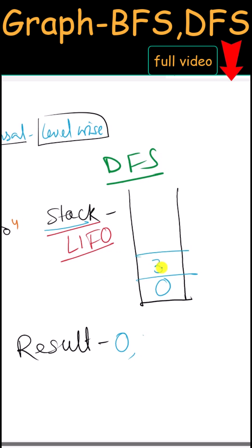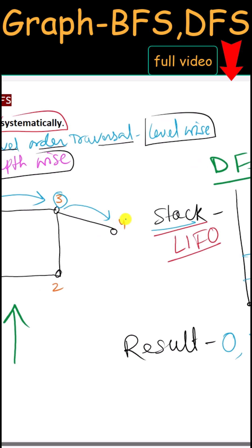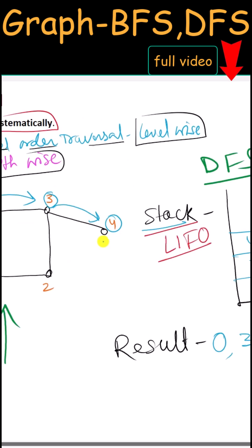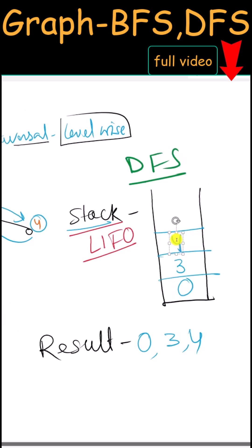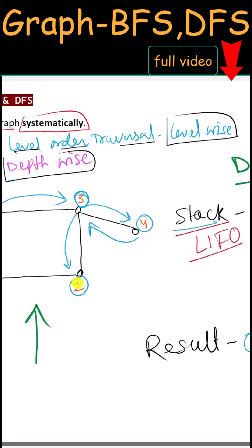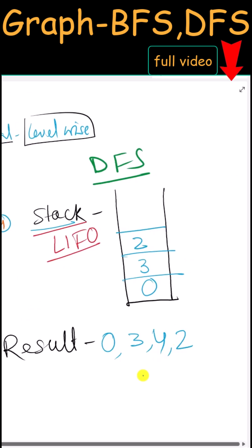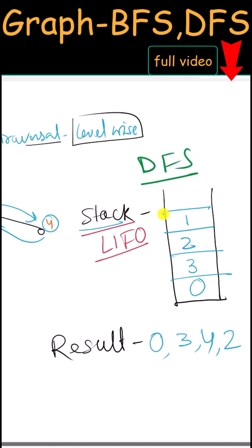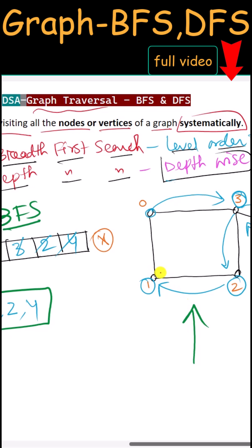The adjacent nodes of 0 can be 3 or 1, so we visit 3 first. Node 3 is pushed on top of the stack and included in our result. Next, adjacent node 4 is visited, pushed into the stack, and included in the result. Now we backtrack by popping from the top of the stack, then visit unvisited node 2, push it onto the stack, and include it in the result.